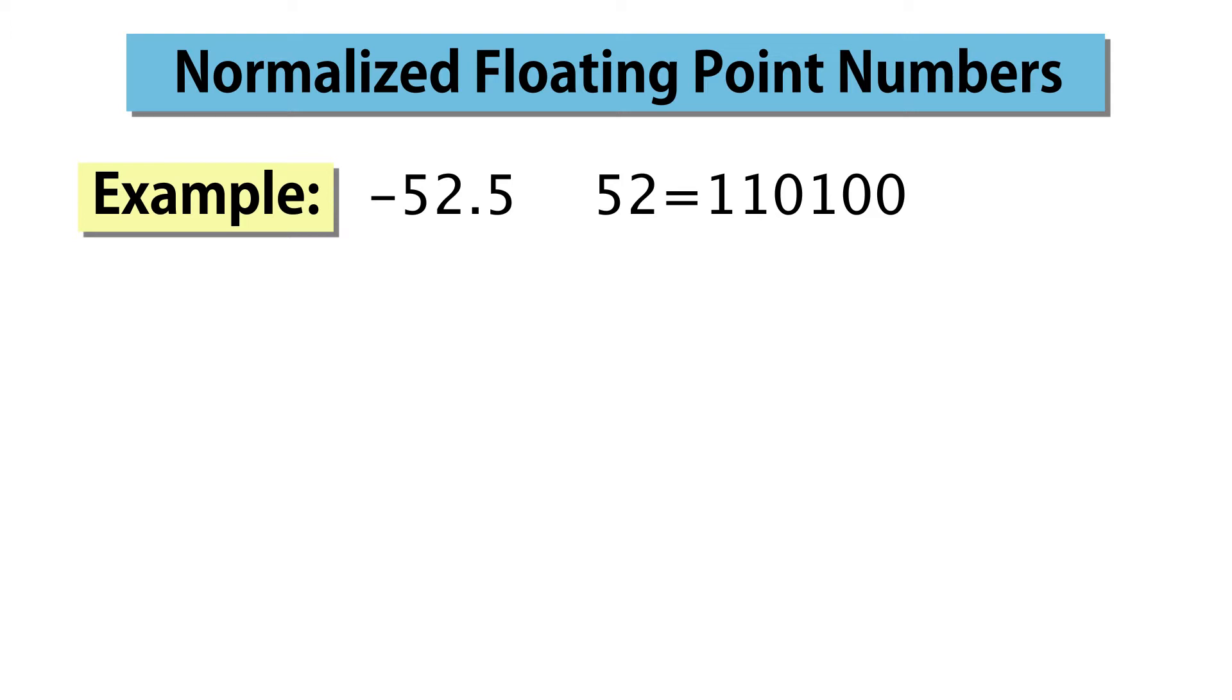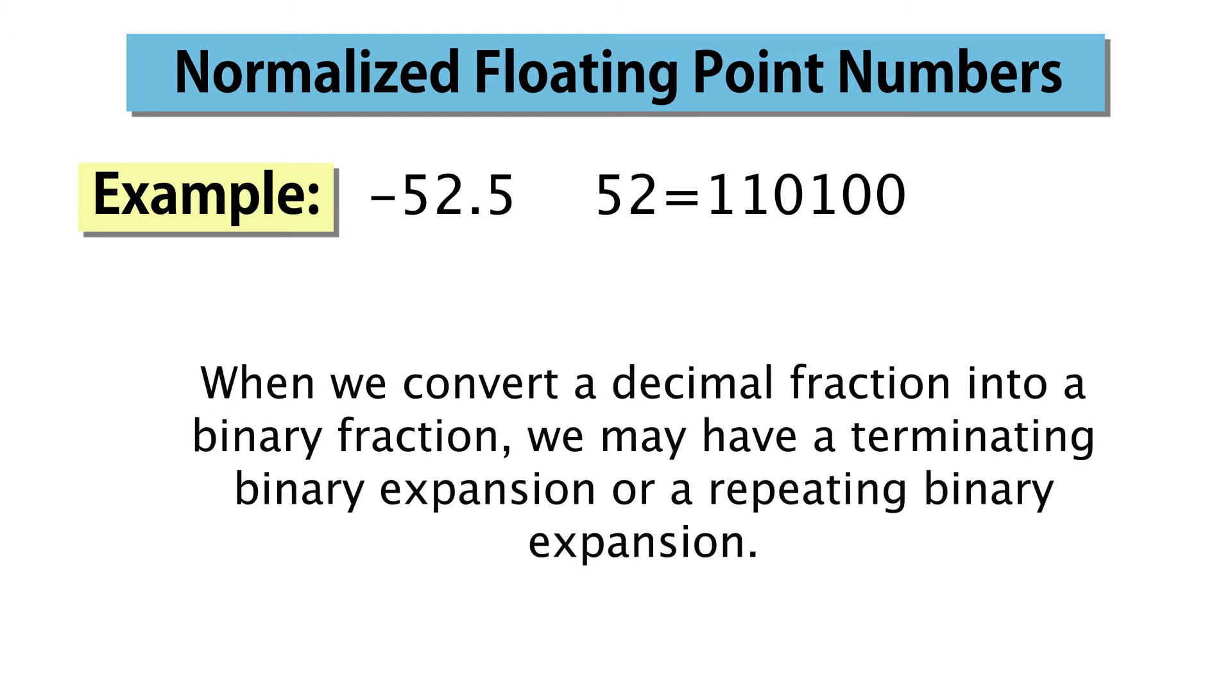Now let's look at the part after the decimal point. When we convert a decimal fraction into a binary fraction, we may have a terminating binary expansion or a repeating binary expansion. In this case, decimal 0.5 or 1 half is equal to binary 0.1.